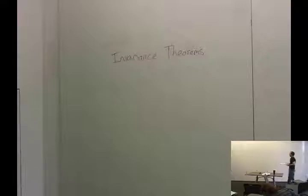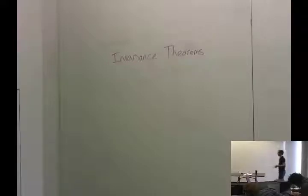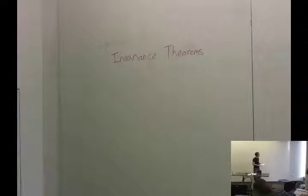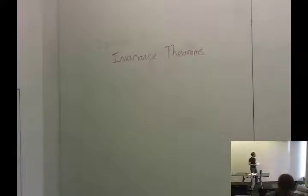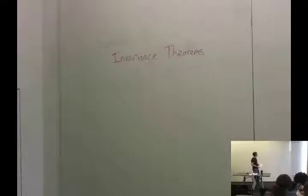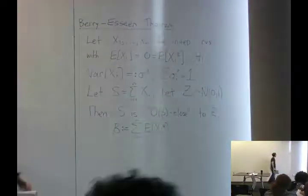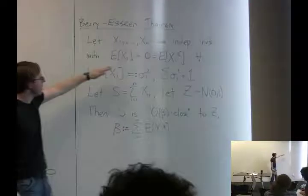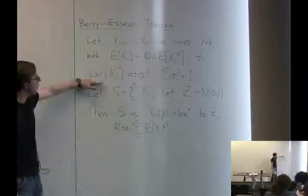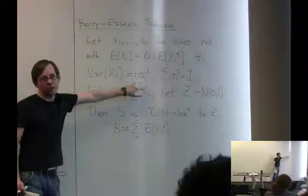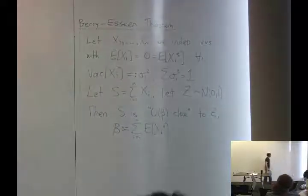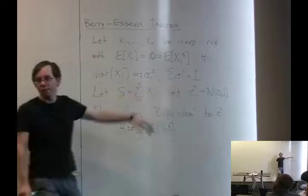As you may remember from lecture 9, we used the Berry-Esseen theorem to do some calculations. This is a form of the central limit theorem which has error bounds. The general setting is you have a bunch of independent random variables x1 through xn. For normalization, assume they have mean 0, and let the variance of the i-th one be sigma_i squared. By normalization, assume the sum of all the variances is 1.